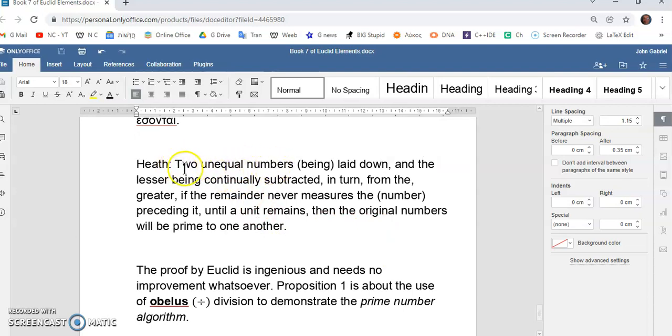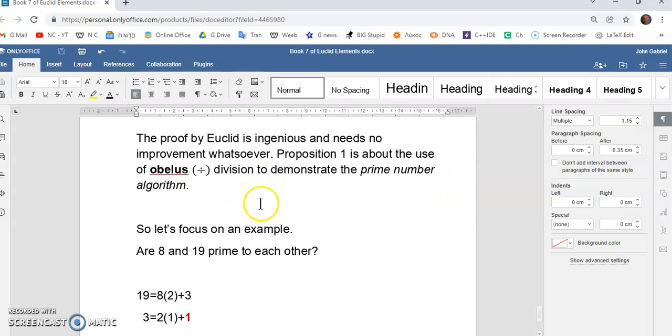So, he says that if you take two unequal numbers, the lesser being continually subtracted from the greater, until there is a remainder or there is no remainder. If there is a remainder, it will be 1, and if there's no remainder, it means the two numbers are not prime. So, I'll get back to that in a moment.